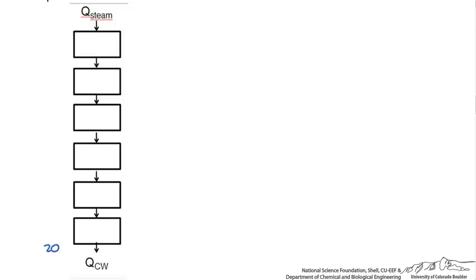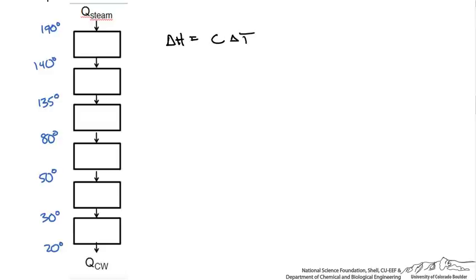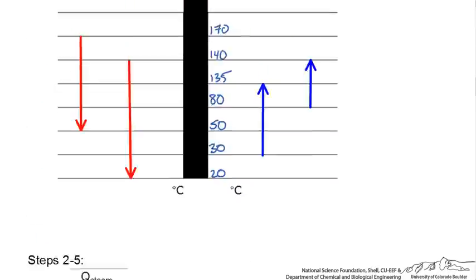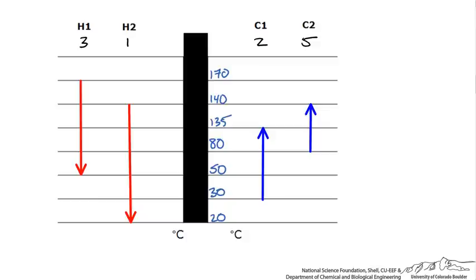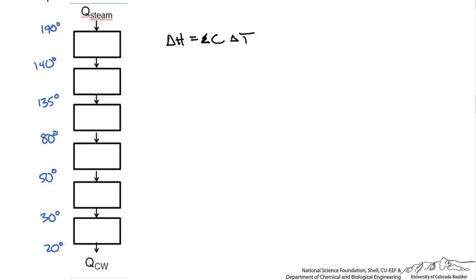The next step is to draw a basic flow chart showing the transfer of energy between each temperature interval, starting with the lowest temperature at the bottom, and writing the temperatures of each interval between the boxes. To determine the enthalpy of each interval, the equation is delta H equals the sum of heat capacity flow rates times the temperature difference. For the interval from 140 to 170, only one stream is involved, so delta H equals 3 times 30, giving 90 kW.